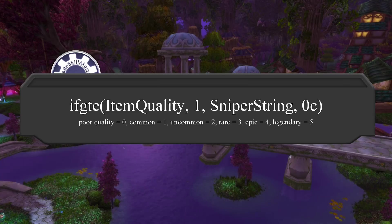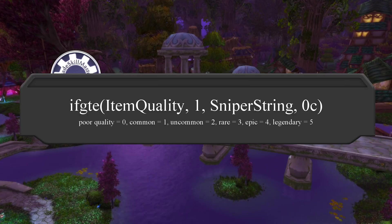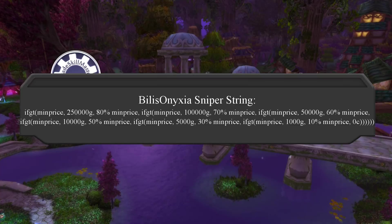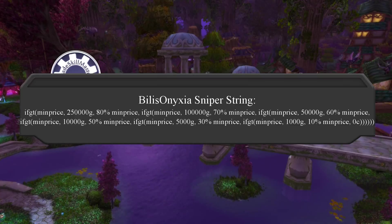With TSM4, we have some new logic functions and value sources we will incorporate into our sniper string. We can now completely exclude all poor quality items — those gray items — from showing up in your sniper string. This is how we write the string to do that: if item quality is greater than or equal to 1, then use the Billis sniper string. Now all we need to do is add in the Billis sniper string to that formula.